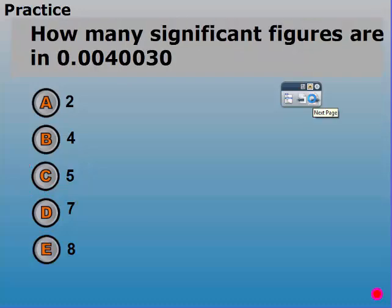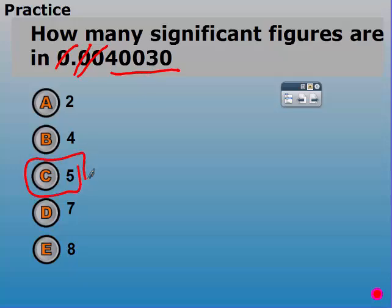Restart when you have this one. Two — leading zeros do not count. All the others do: these were captive, and this one counts because of the decimal. So that gives us five significant figures.